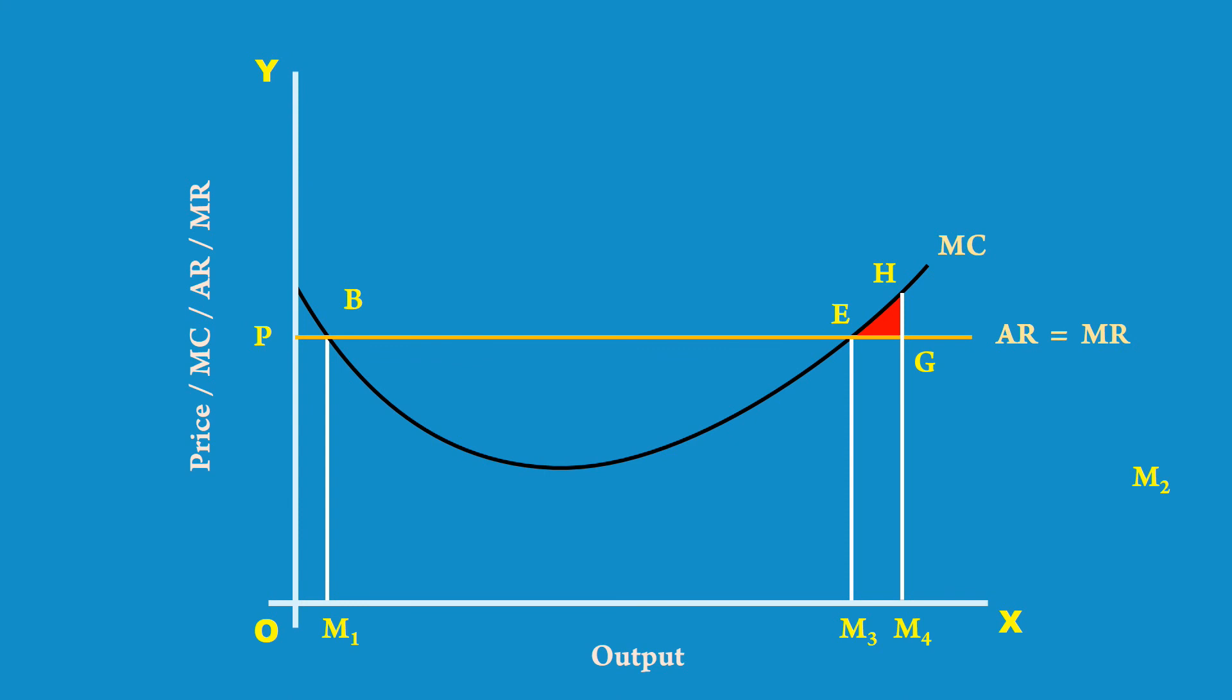He cannot maximize his profit. Point E determines producer's equilibrium. It fixes profit maximizing output M3. No other output level will maximize his profit.